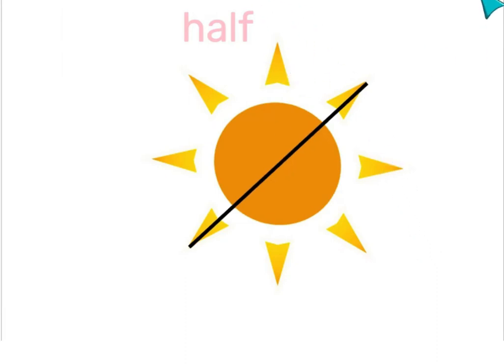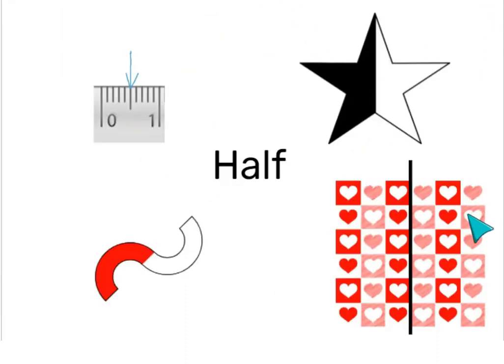In the end, it's simple. If both parts of the object or area are equal, it is half.